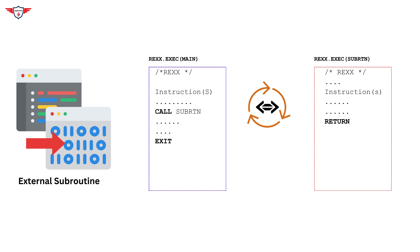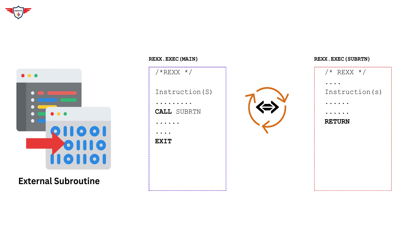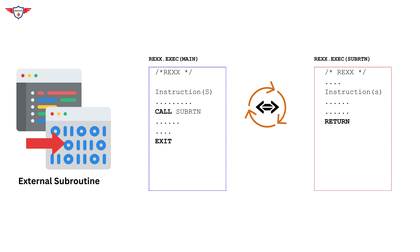Now let's talk about our second category of subroutines: external subroutines. External subroutines are routines that are designed and stored as a separate RECS program or script, and they can be called from your main program. With the help of external subroutines, you can divide your complex business logic into small modules, allowing you to reuse code without rewriting it again and again. In short, this improves the modularity and readability of your program.